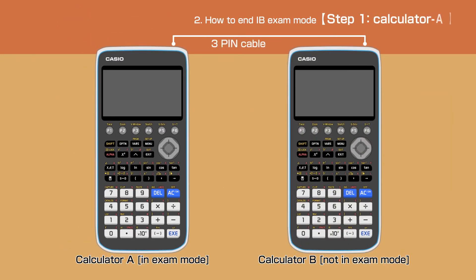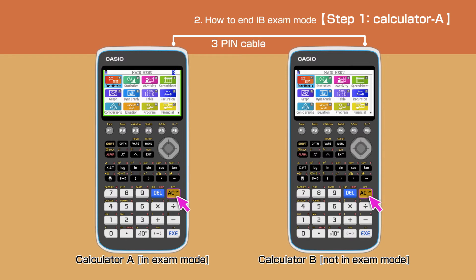which is done by connecting to another calculator. Have the 3-pin cable that came with the calculator and another CZ50, which is not in exam mode, ready. Connect the two calculators and then switch on both calculators.